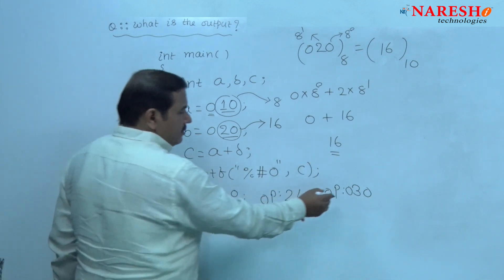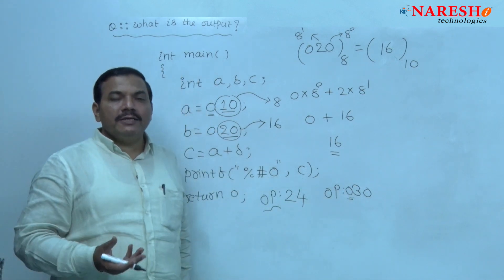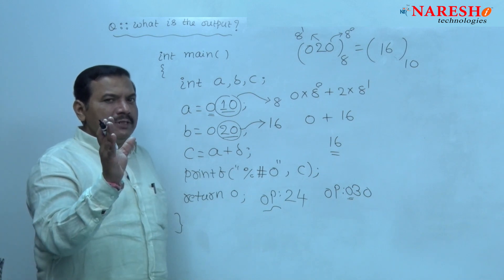Now we can see 0 in front of 30. Without hash, just we will get 30 onto the screen.